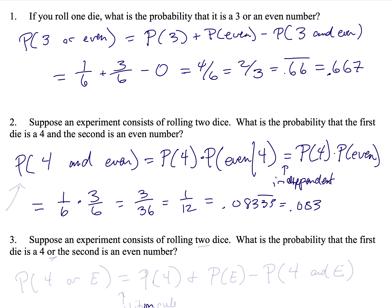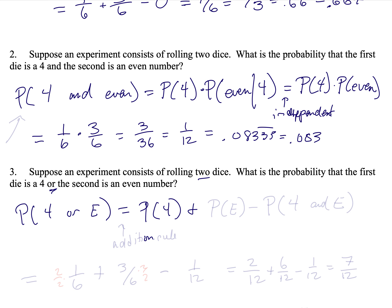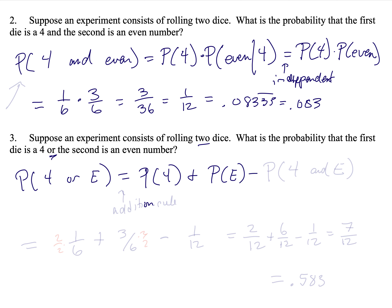Now suppose an experiment consists of rolling two dice again. What is the probability that the first die is a four or the second is an even number? That's the only difference from the previous problem — two dice, and now it's 'or' instead of 'and.' By the addition rule, the probability the first is a four or the second is even equals: P(first is four) plus P(second is even) minus P(both are true). In general, 'or' goes with addition.